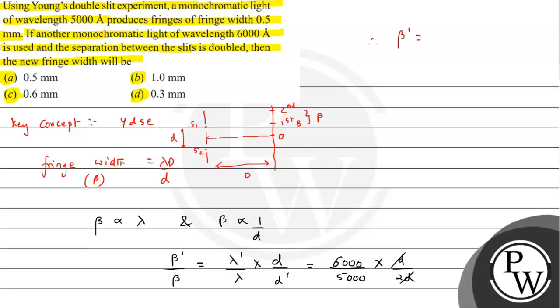We can write here, beta dash will be equal to 6 upon 5, 6 upon 10. This comes out to be 0.6 beta. So beta dash will be equal to 0.6 times beta. We have given beta as 0.5 mm, so this will be 0.3 mm. This is the new fringe width we are getting for this question, which will match option D. I hope you understood the solution. All the best.